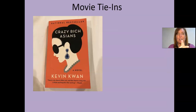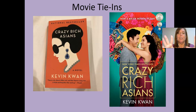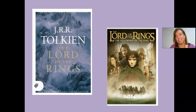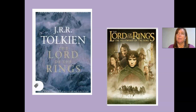Movie tie-ins are super common. Here's the original version of Crazy Rich Asians, but when a movie is made of it, you re-release the book with the movie poster version. This encourages a new audience and lets them know there's a movie that goes with the book. Some savvy marketers, like with the Twilight series, actually had different versions of the movie tie-ins for people collecting various versions featuring Edward or other characters.